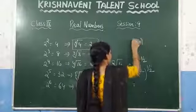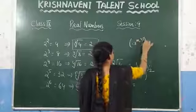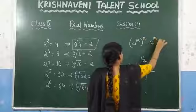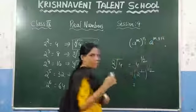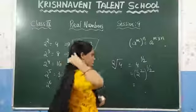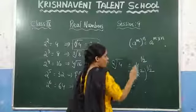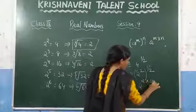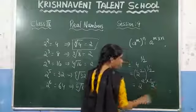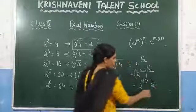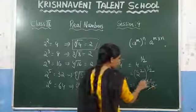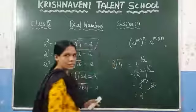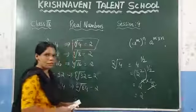By the law of exponents — A power M, whole power N equals A power M into N — you can write this as 2 power 2 into 1 by 2. The 2s cancel, and you get 2. That is how we prove it.